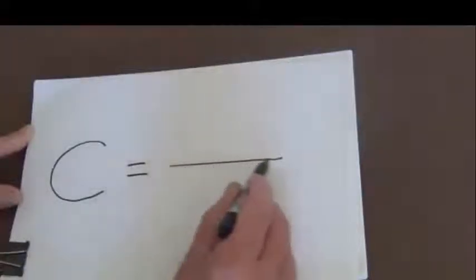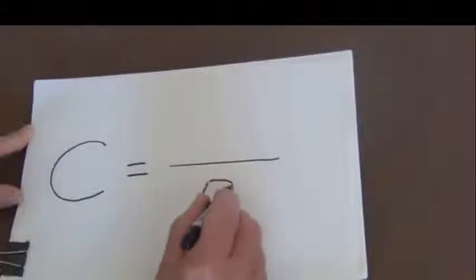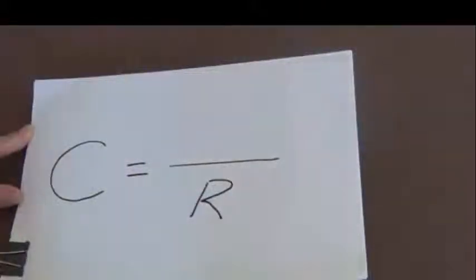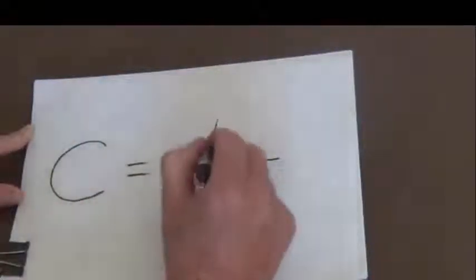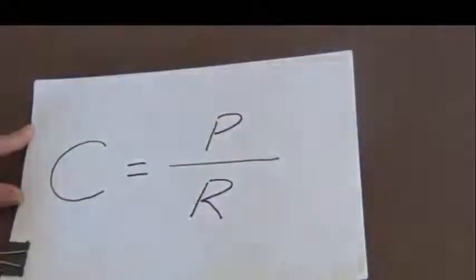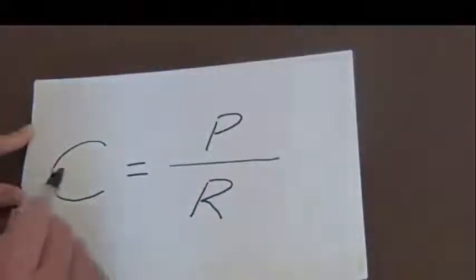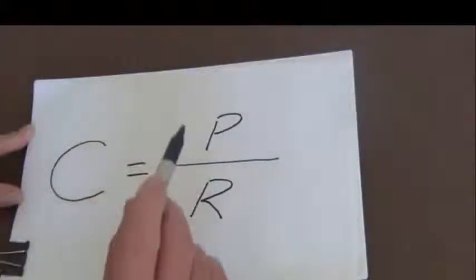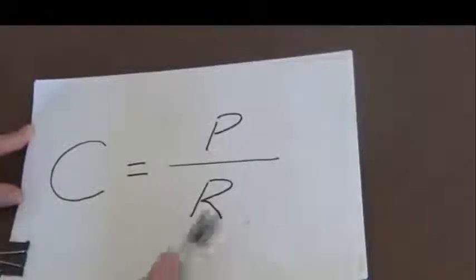So we will start by putting what we want to know on one side, the old equals sign like any formula. So we know the current is inversely proportional to the resistance, so we will put the resistance on the bottom. And we know the flow is directly proportional to the pressure, so we will put the pressure on the top line. So we have the current equal to the pressure divided by the resistance.